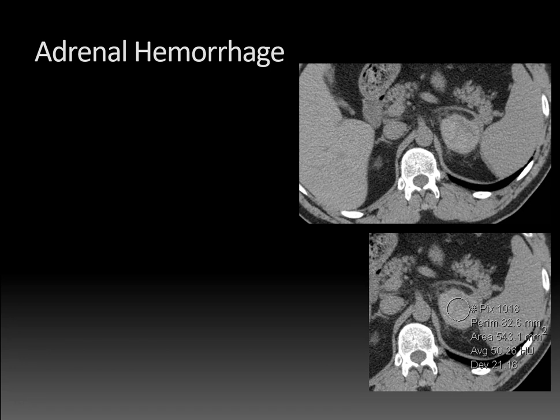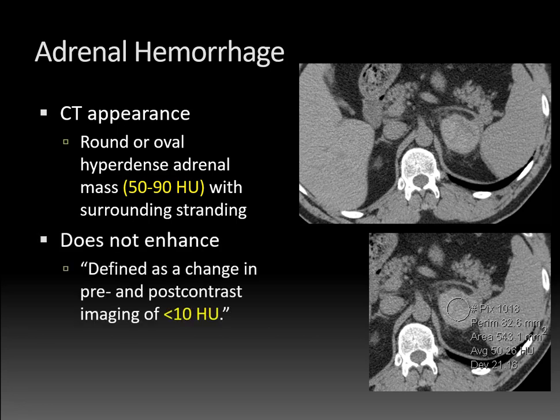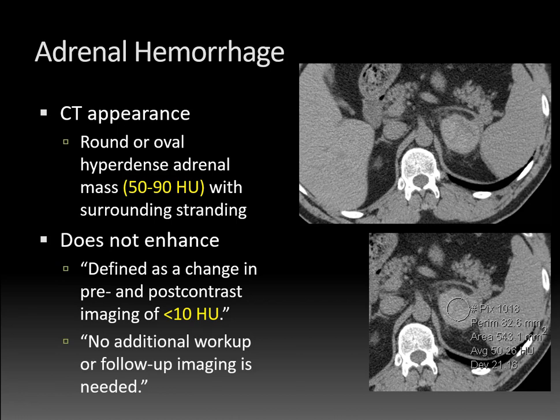So this is characteristic of adrenal hemorrhage. On CT, hemorrhage will typically be a round or oval hyperdense adrenal mass with a density of 50 to 90 Hounsfield units — that's the density of blood — and there'll be surrounding stranding due to inflammation in the fat and fluid. Adrenal hemorrhage should not enhance, which is defined as a change in pre- and post-contrast imaging of less than 10 Hounsfield units. This means the density of 50 Hounsfield units on non-contrast CT would not increase to more than 59 Hounsfield units after intravenous contrast, because it's just a hemorrhagic mass with no underlying tumor. In that case, no additional workup or follow-up imaging is needed.